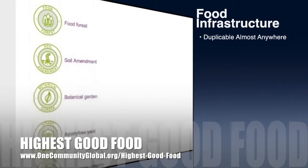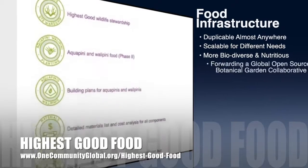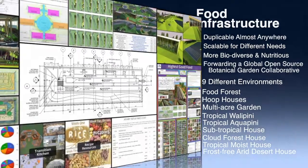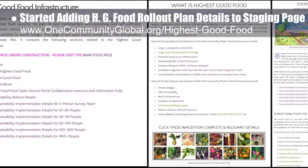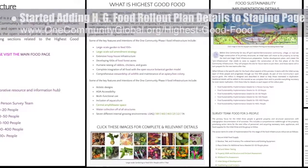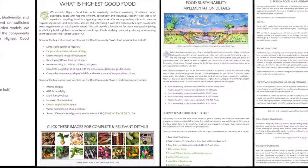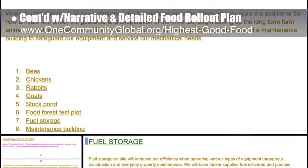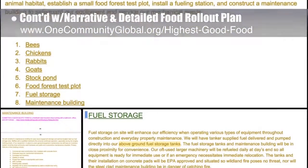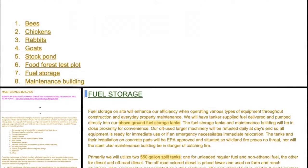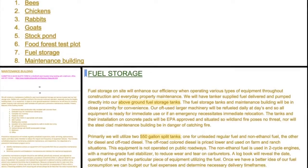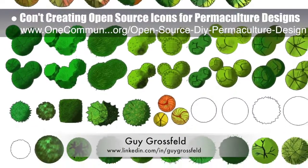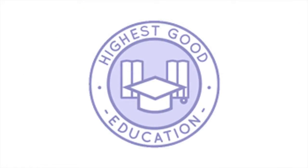James Harrigal, student researcher, completed a seventh week researching the best, safest, and most sustainable paints, focusing on integrating lead points details related to paints. One Community's approach to highest good food is duplicable almost anywhere, scalable for different needs, more biodiverse and nutritious, and includes nine different free shared and duplicable growing environments. This week the core team started adding all the highest good food rollout plan details to a staging page, rebuilding menus, updating formatting, and adding completed details for the initial three-person survey team.